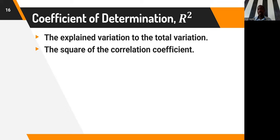To establish how much variation each variable explains in the other, we compute R-squared by squaring the correlation. Squaring negative 0.638 gives us 0.407, meaning any variation in the number of exams a person takes explains about 41% of the variation in anxiety that person faces.